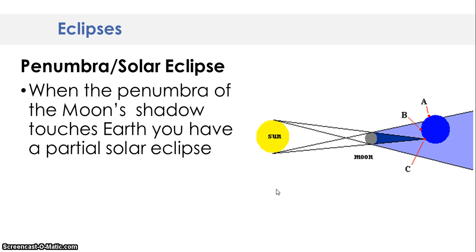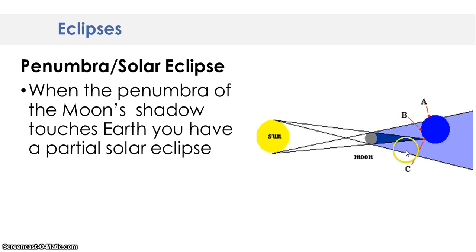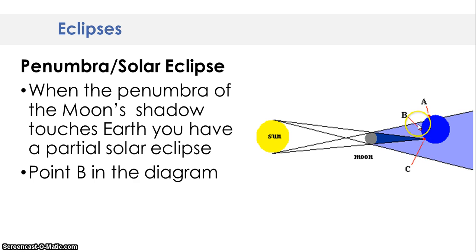We're going to talk about a penumbra during a solar eclipse and a penumbra during a lunar eclipse. First, the solar eclipse — you don't need to write this down; we're just going to talk about it. When the penumbra of the moon's shadow touches Earth, you have a partial solar eclipse. Here's our light source, the sun, hitting the moon. The moon is casting a shadow. The darkest part we already talked about. Now this area — the light blue — is that partial light, the lightest area of the shadow. Point B would be experiencing a partial solar eclipse.